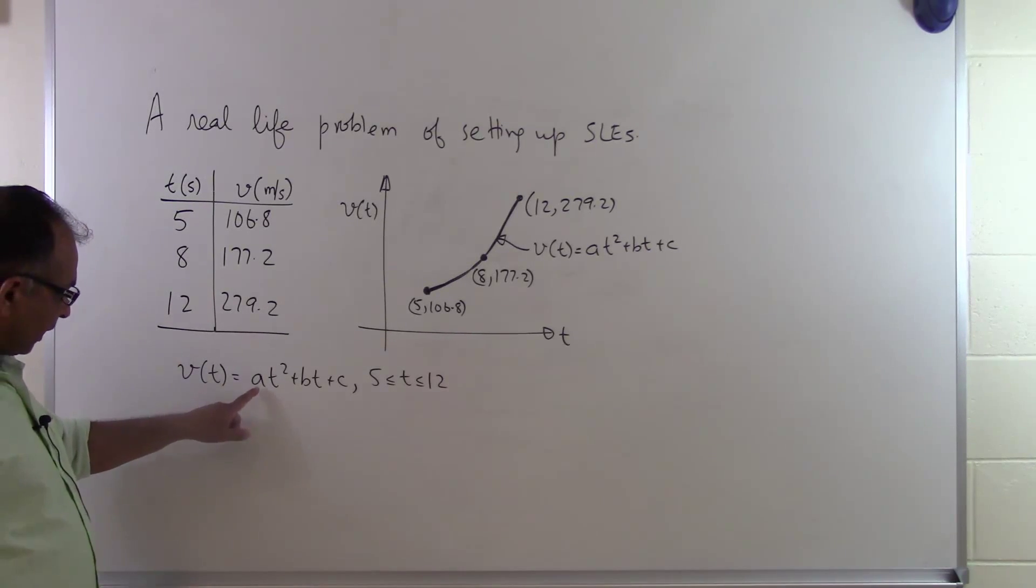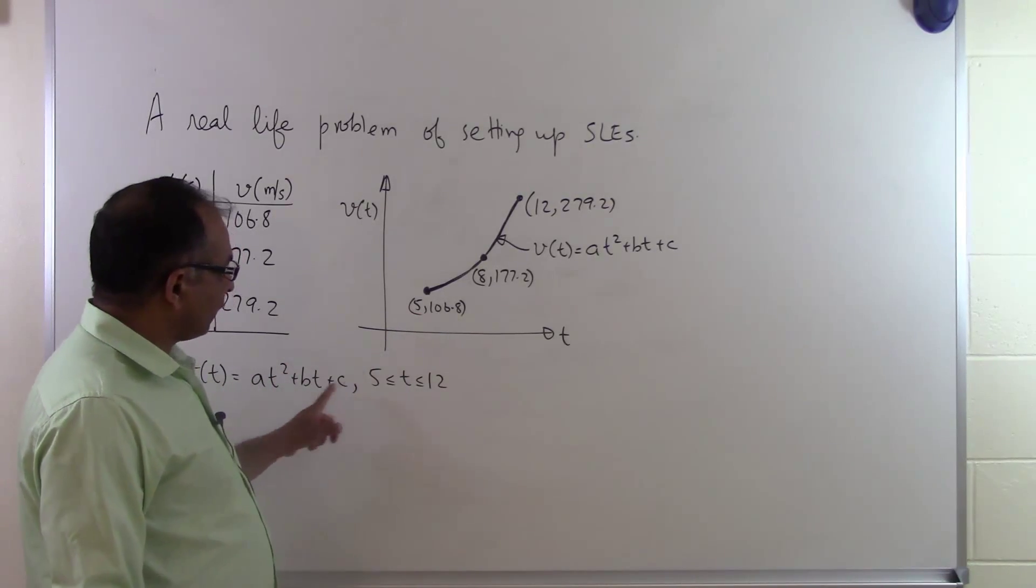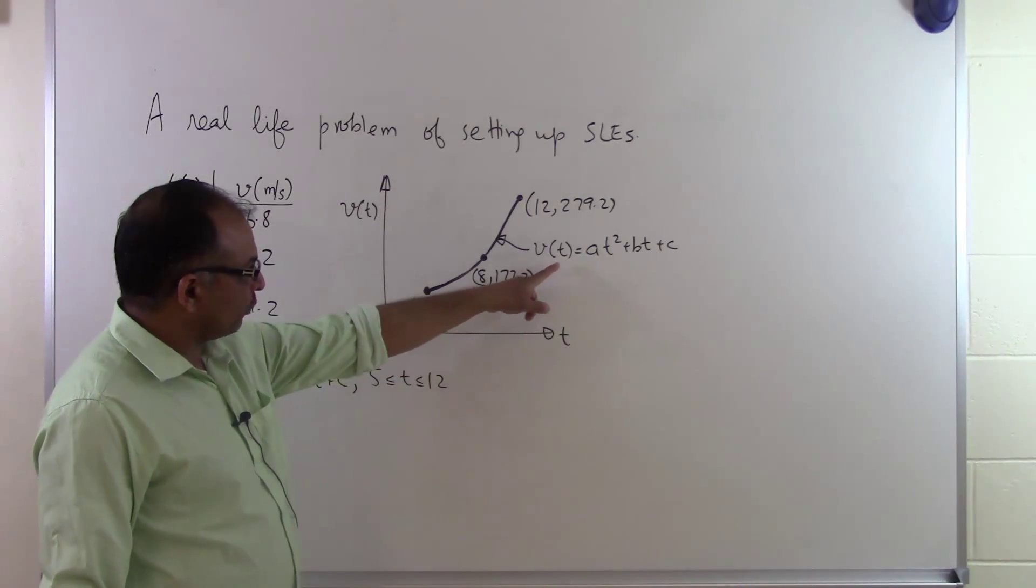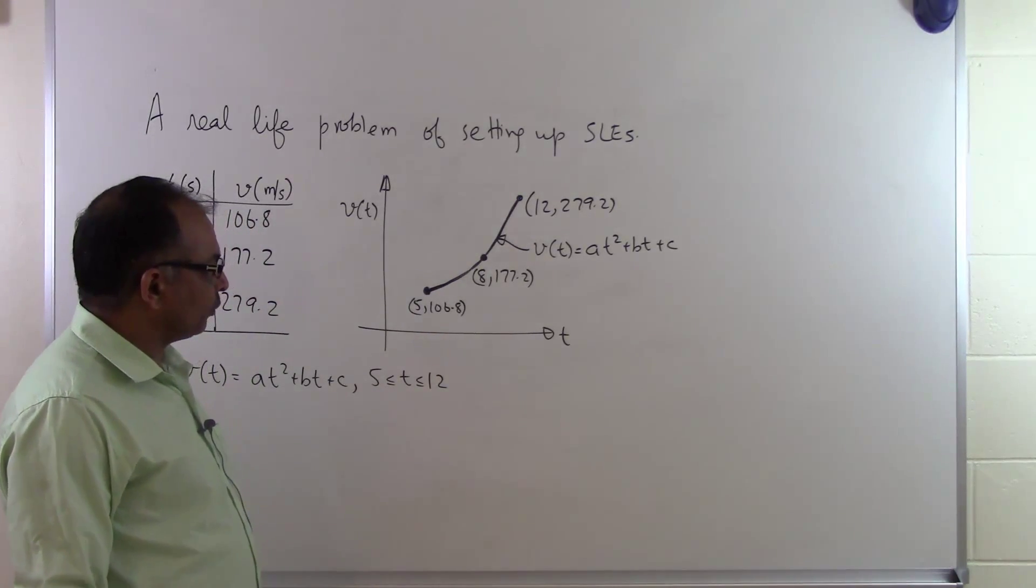The question arises, how do I find out a, b, and c? The thing we're seeing here is that this velocity profile, the second order polynomial, is going through three points. That's going to help me set up three equations.